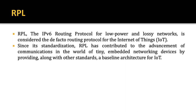RPL is considered the de facto routing protocol for the Internet of Things. This protocol works on IPv6. We have two types of logical addressing: IPv4, represented with 32 bits, and IPv6, represented in 128 bits. This protocol is working in IPv6, though it can also be converted to IPv4.